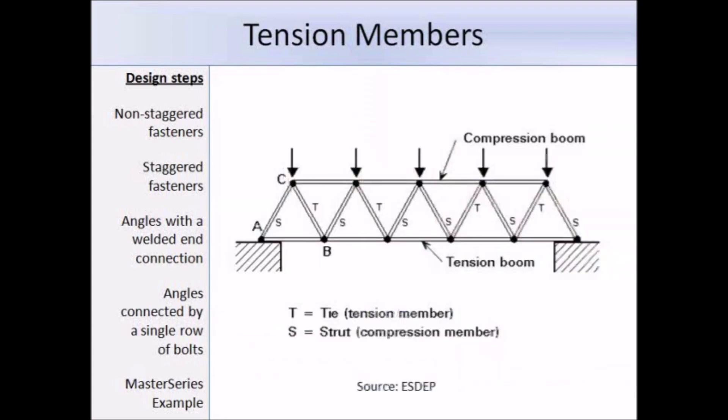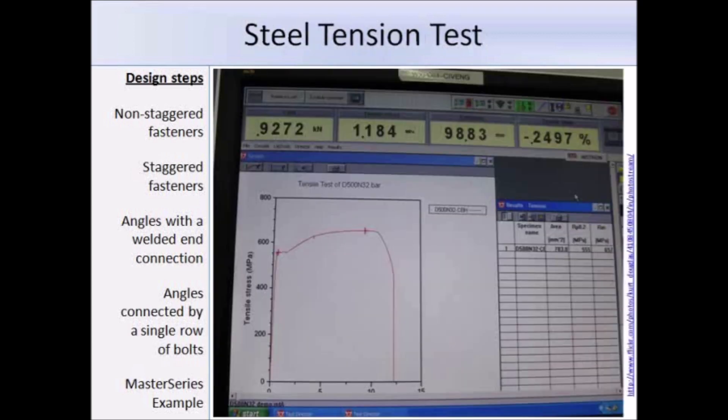Here is another example of a tension member. You can see the tension members in this truss have been indicated with a capital T beside them, and tension members in a truss are normally referred to as ties. Tension members are generally designed using rolled sections, bars or flats. Here is a photograph from a real life steel tension test and you can see clearly the stress-strain relationship.